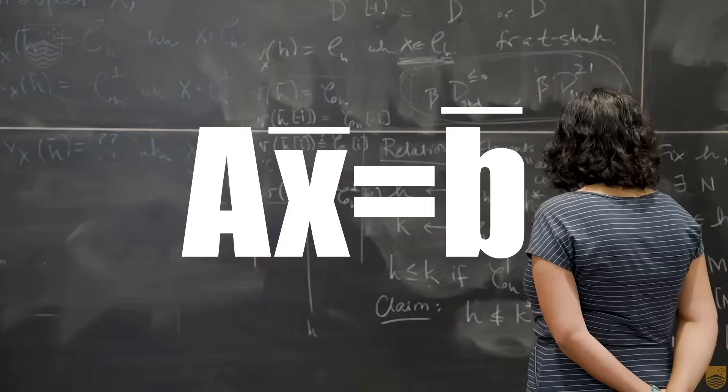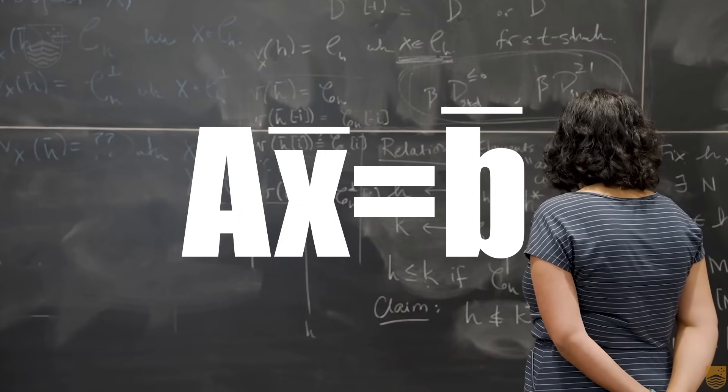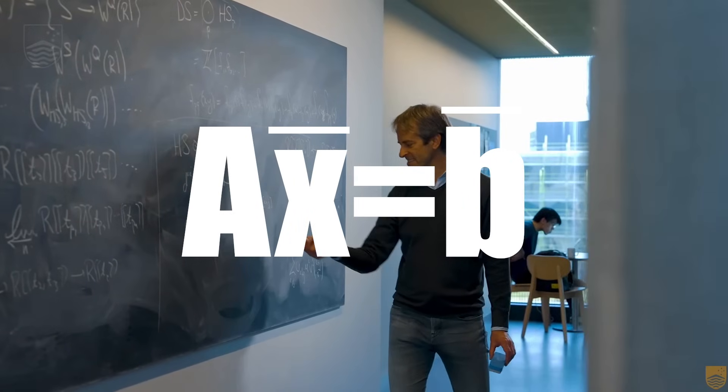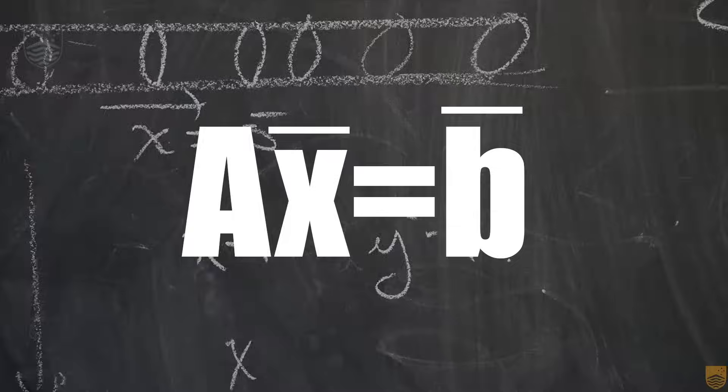It all comes down to this. AX equals B. That's the equation at the heart of every first course in linear algebra. It's just three symbols. It should be easy enough, right?